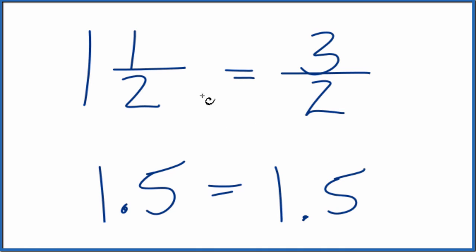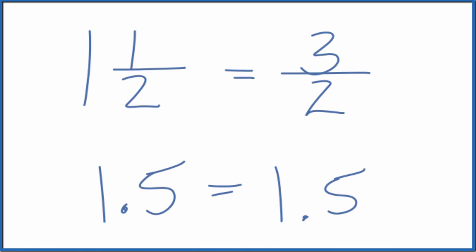So to recap, we take 1 times 2, then we add the 1, that's giving us the 3, bring the 2 across, and we have our improper fraction. This is Dr. B, and thanks for watching.